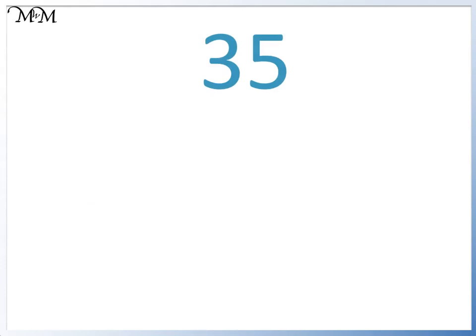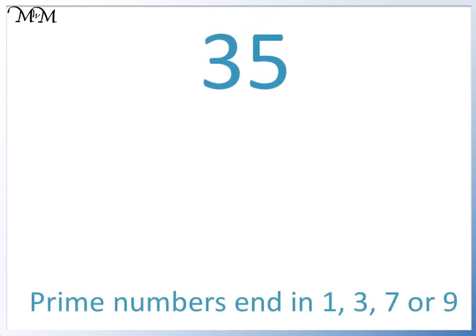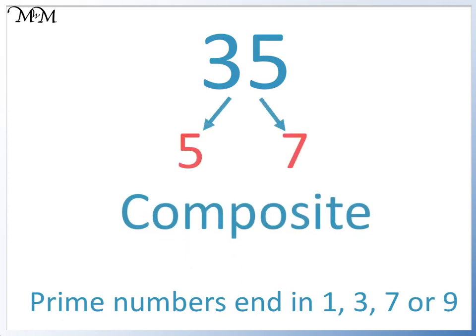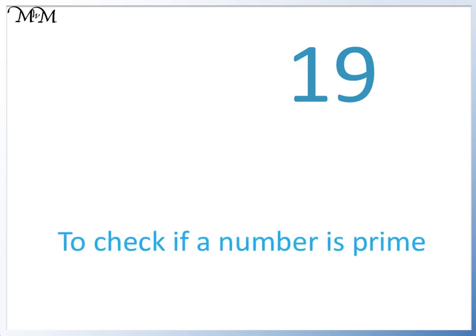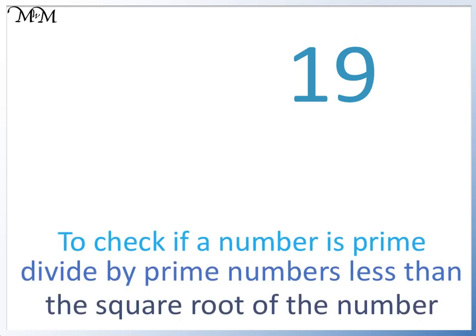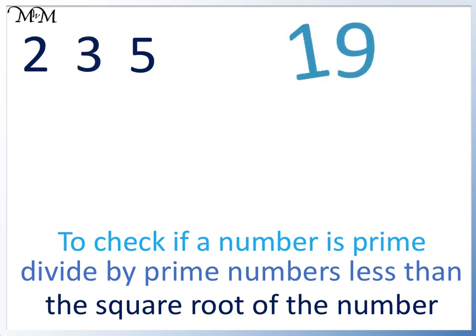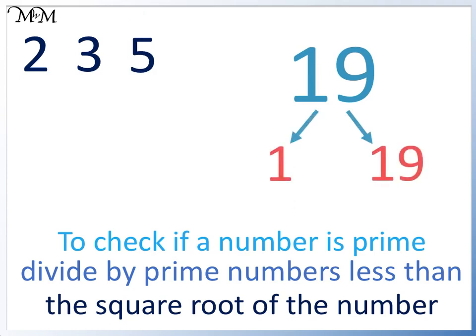We can check 35, which is 1 less than 36, which is in the 6 times table. 35 ends in 5. Prime numbers only end in 1, 3, 7, or 9, so it is composite. It is 5 times 7. We can check 19. 19 is 1 more than 18 in the 6 times table. It ends in a 9, so it might be prime. To check if a number is prime, we divide by prime numbers less than the square root of the number. 19 is close to 25, so we can check 5 and below. 2 doesn't go into 19, 3 doesn't go into 19, and 5 doesn't go into 19. 19 is 1 times 19, so it is prime.